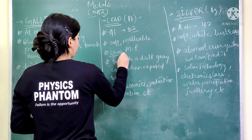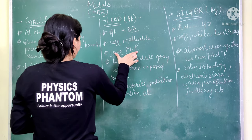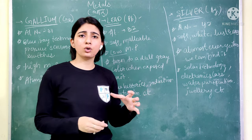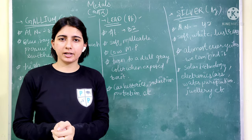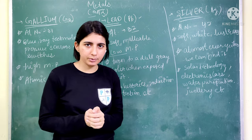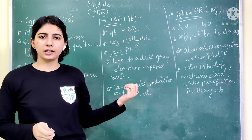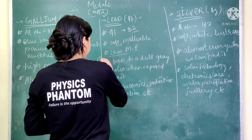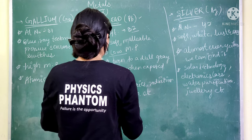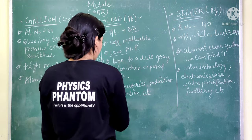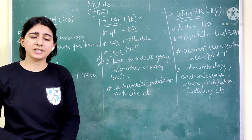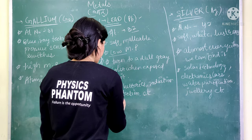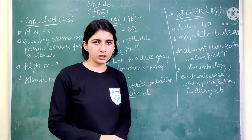Lead has a low melting point. When lead is kept in the atmosphere, it turns a dull gray color — this is an important point to remember. Lead is used in pencils, car batteries, and radiation protection technology.